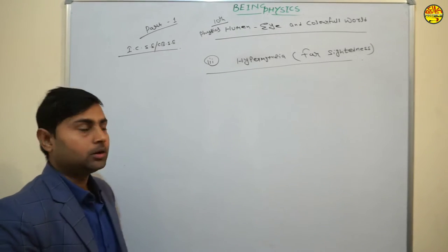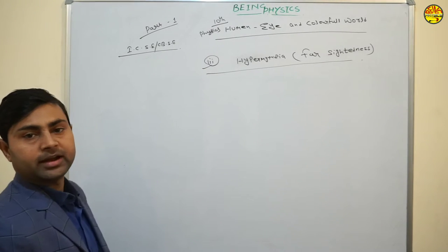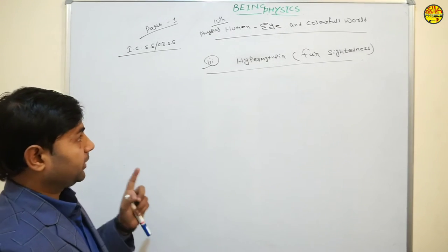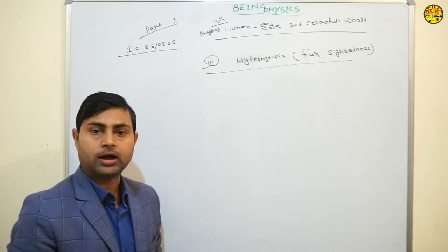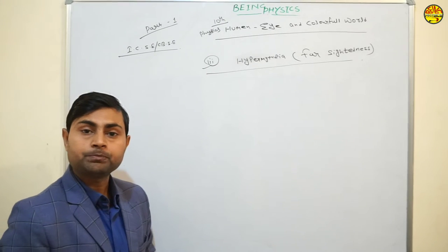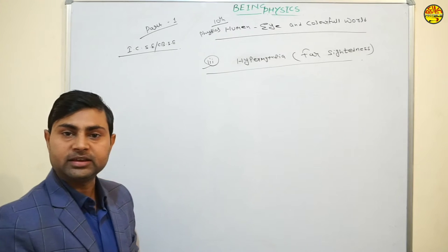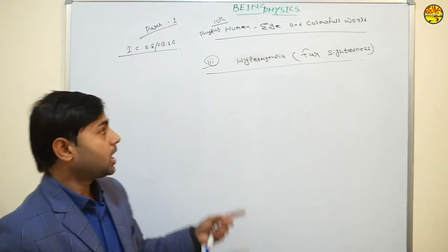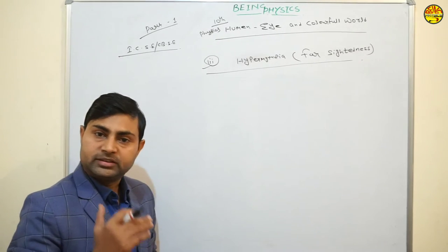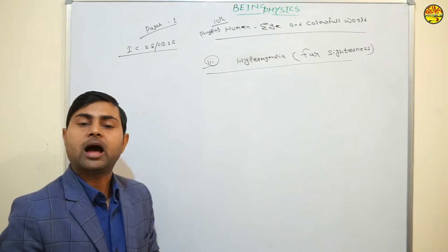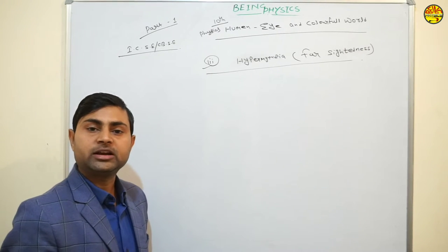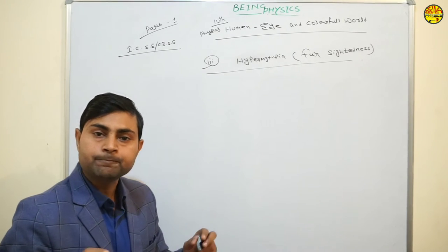The second defect is Hypermetropia, or far-sightedness. A useful trick: in myopia, the nearby object was clearly seen and distant objects were not. In hypermetropia it is the opposite — you can see distant objects clearly, but nearby objects cannot be seen clearly. So hypermetropia is the defect of the eye in which distant objects can be seen clearly but nearby objects cannot.